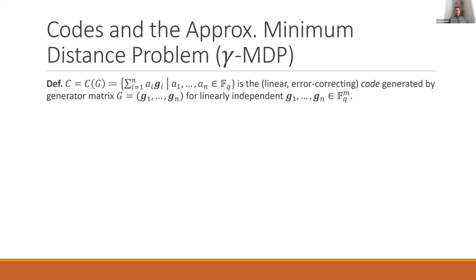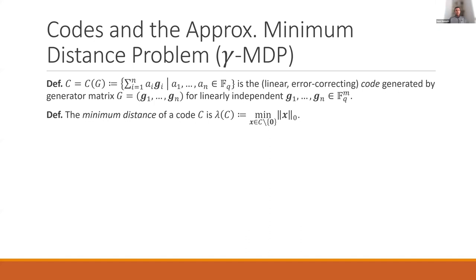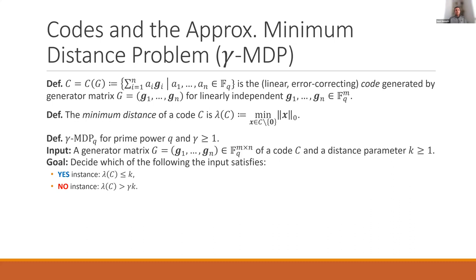The other fundamental object of study in this talk will be linear error correcting codes, which are the finite field analog of lattices. More formally, the code generated by generator matrix G is just the FQ linear combination of n linearly independent vectors G1 up to Gn. This looks very syntactically similar to the definition of a lattice — the main difference is that everything is over a finite field FQ instead of allowing real basis vectors and integer coefficients. The minimum distance of a code is defined analogously, but using the Hamming weight of vectors instead of LP norms — specifically, the minimum Hamming weight of a non-zero codeword in the code.